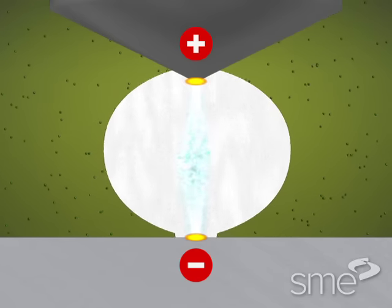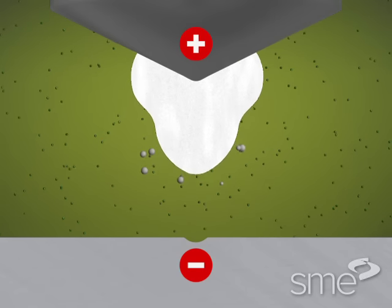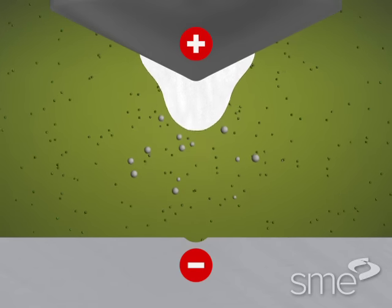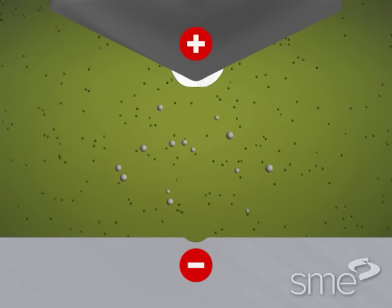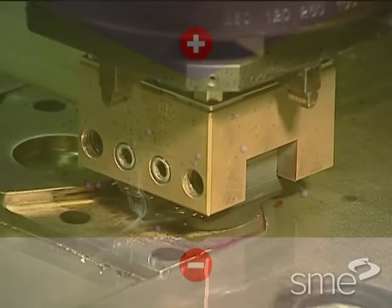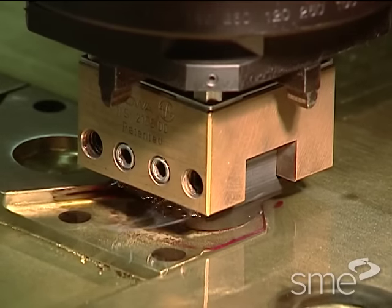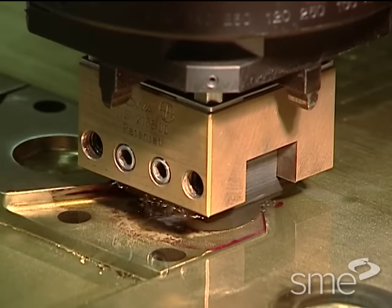Once the pulse ends, the spark and heating action stop, collapsing the spark channel. Dielectric fluid rushes into the gap, flushing molten material from both surfaces. This EDM residue consists of small solidified balls of material and gas bubbles.